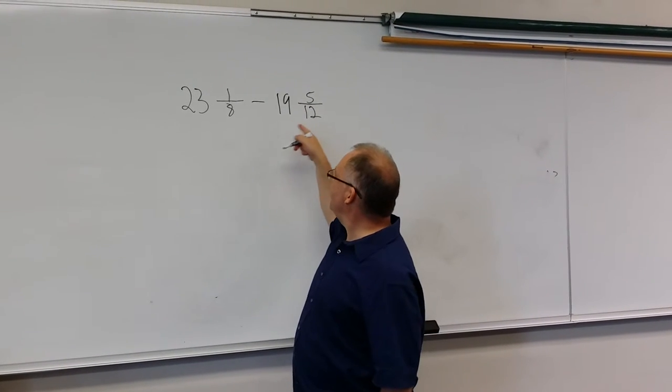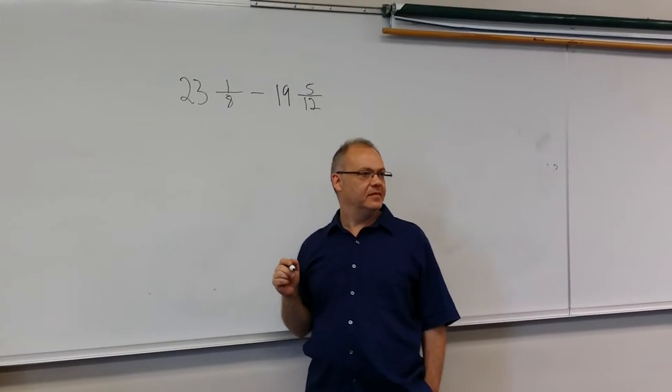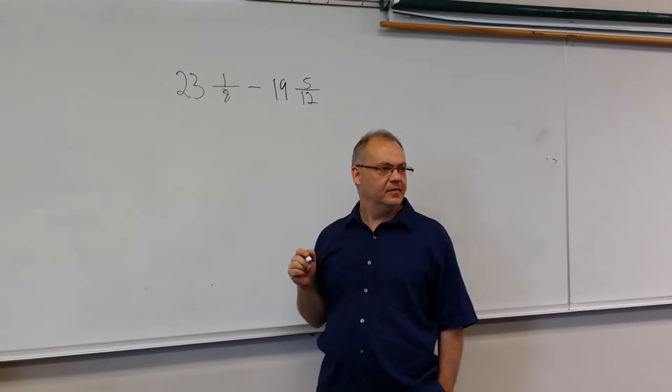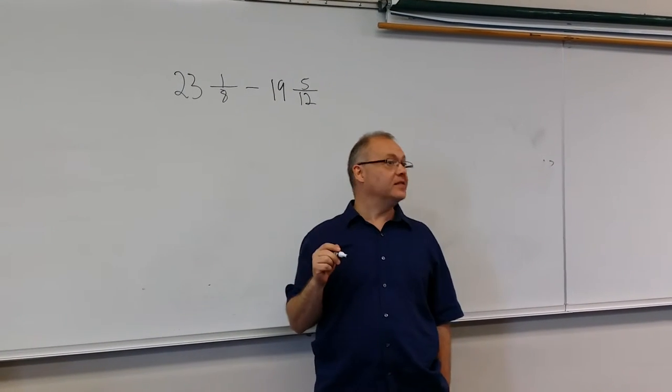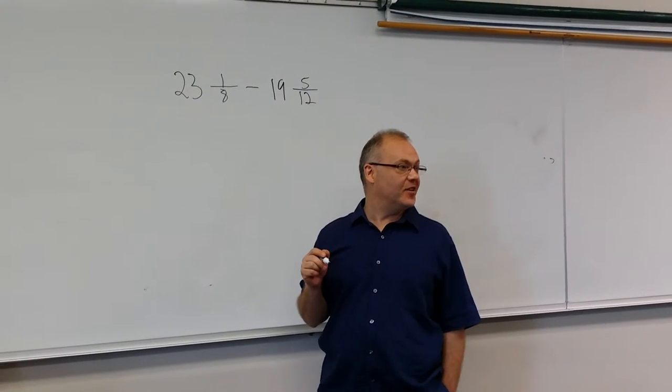What's the common denominator between 8 and 12, the lowest one? I think it's 12. 24. 24, because 8 and 12 both go into 24. Right.